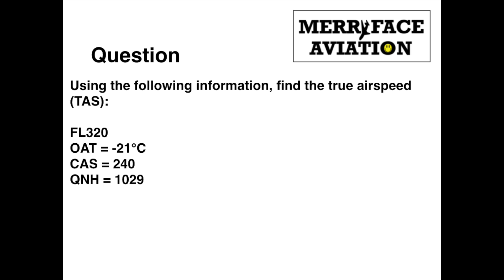The question I used was the following. We are given the following information and from it we need to find the true airspeed, or TAS: Flight level 320, temperature minus 21 degrees Celsius, CAS 240 knots, QNH 1029. Note that we won't be using all this information to find TAS. Quite often examiners will give you too much information to see if you know how to identify and use only what you need. Note that you would very rarely, if ever, get such a high temperature at this altitude, but we will ignore it for now for the sake of the exercise.